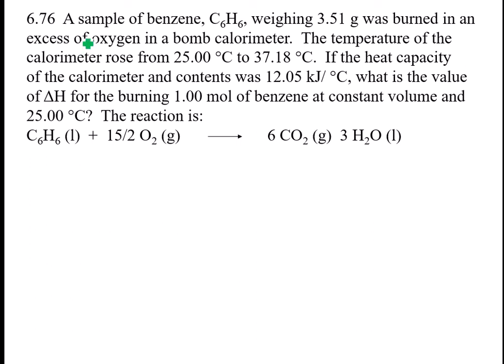A sample of benzene, C6H6, weighing 3.51 grams, was burned in excess oxygen in a bomb calorimeter. The temperature rose from 25 degrees Celsius to 37.18 degrees Celsius. If the heat capacity of the calorimeter and contents was 12.05 kilojoules per degree C, what's the value for delta H for burning one mole of benzene at constant volume at 25 degrees? So here's the reaction.